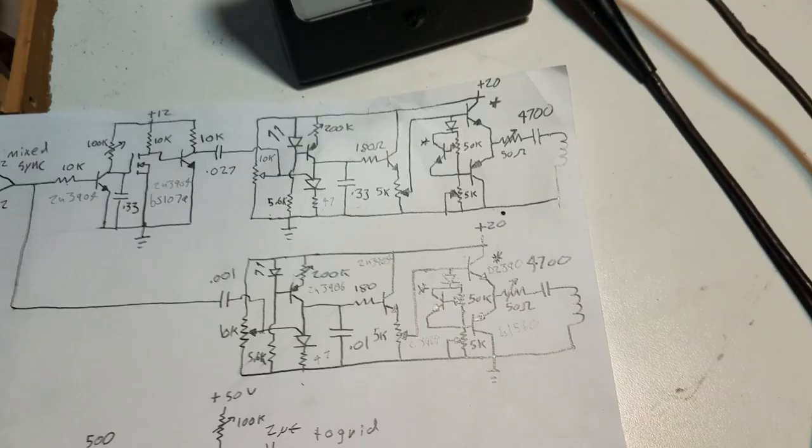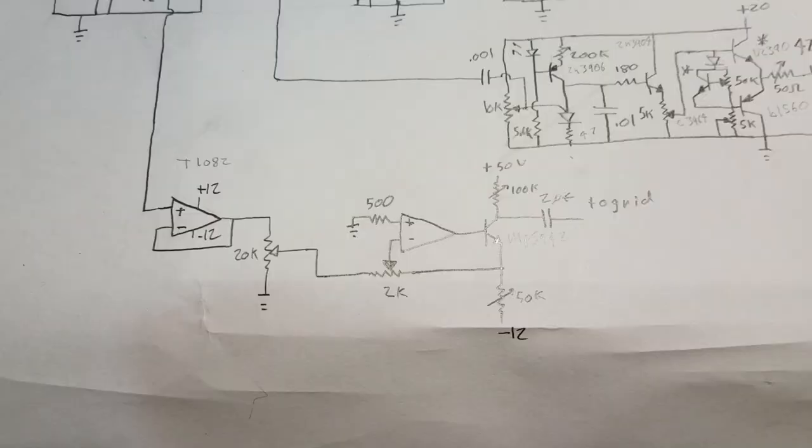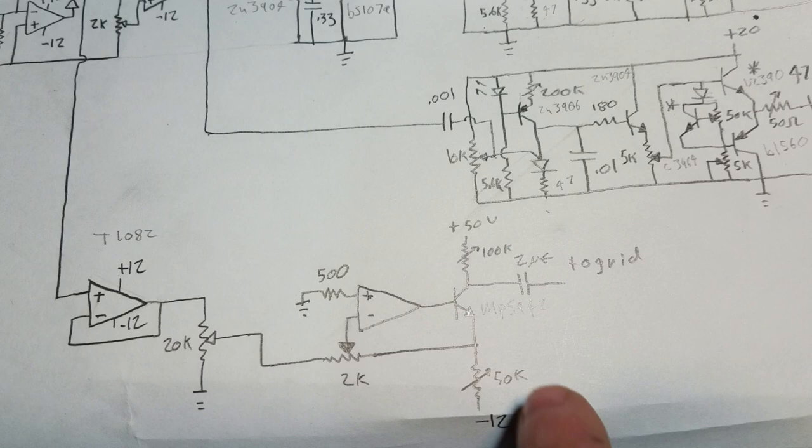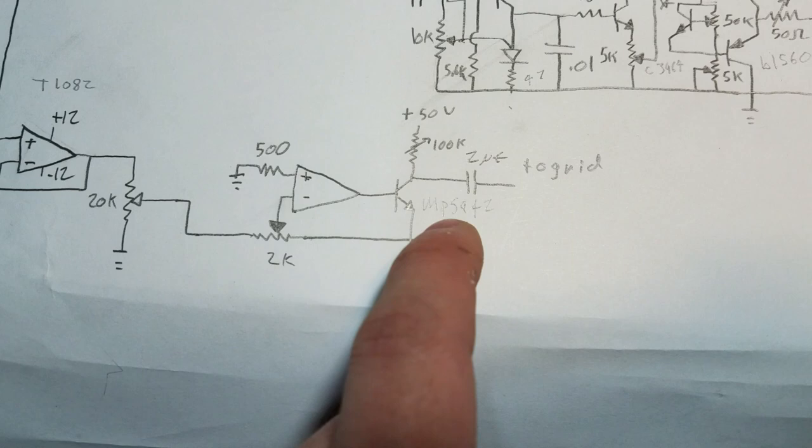Now onto the video amplifier. It just takes the DC video, goes into a unity buffer, and then into an inverting amplifier driving an output transistor right here. It's an MPSA 42, a high voltage transistor. It goes down to negative 12 volts and to plus 50 volts.